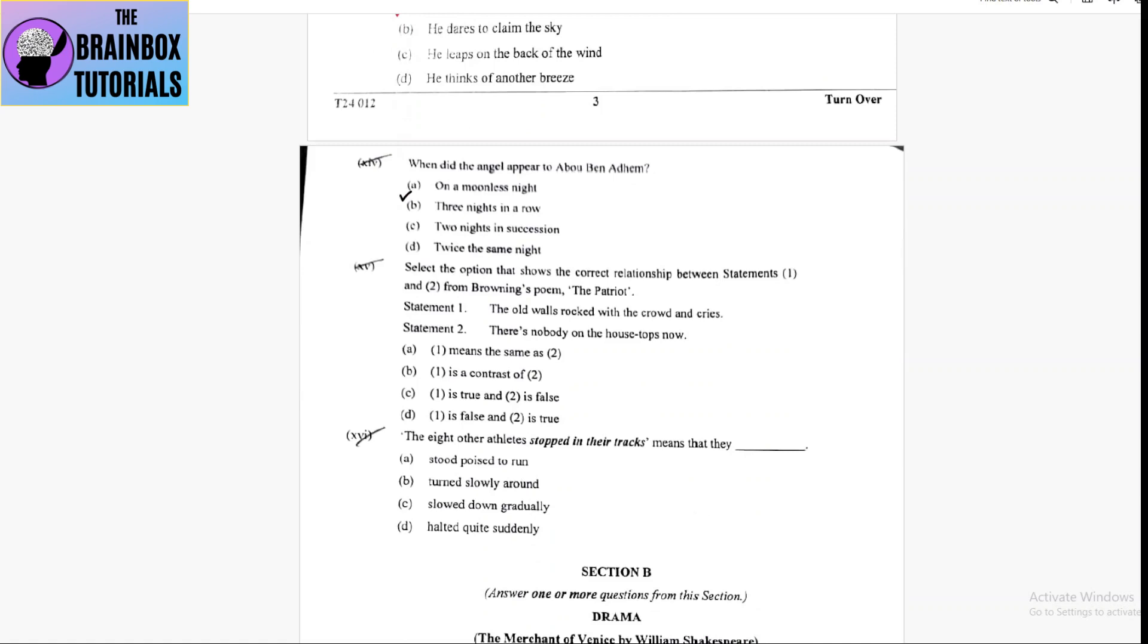Coming to number 14, when did the angel appear to Abel? On a moonless night, three nights in a row, two nights in succession, twice the same night. Option number C will be the correct option, two nights in succession.